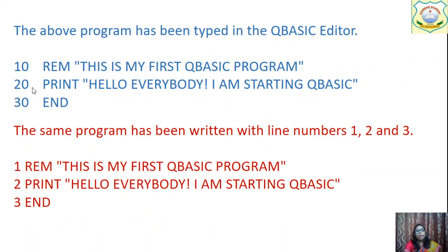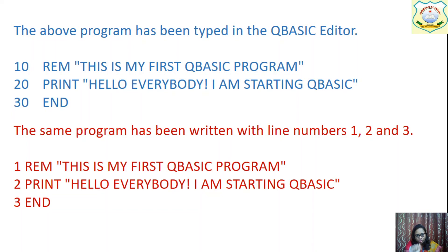Why do we write 10, 20, 30 instead of 1, 2, 3? Because if we write 10, 20, 30, we have space to insert more line numbers in between. If we write 1, 2, 3, we cannot insert a line — we would have to change the whole code. With spacing like 10, 20, 30, we can insert a line in between any of these numbers because there is space.